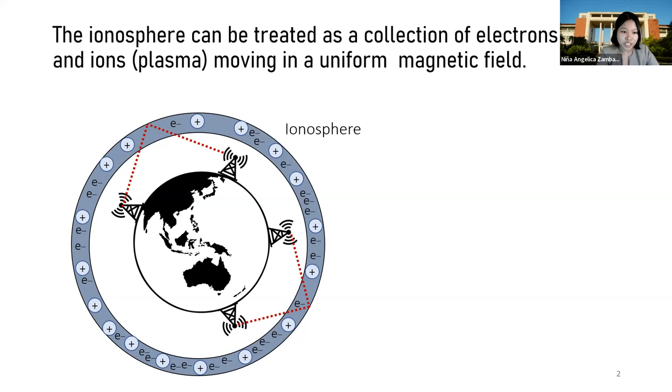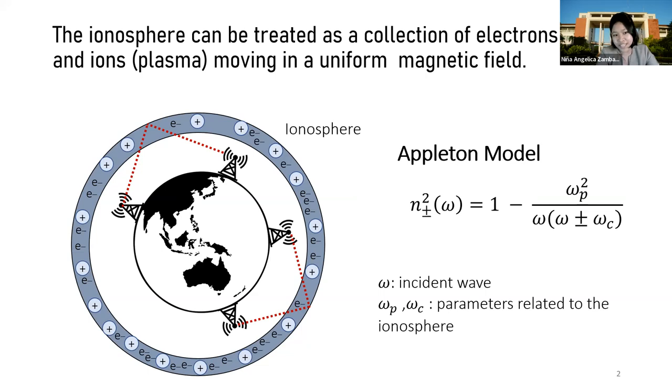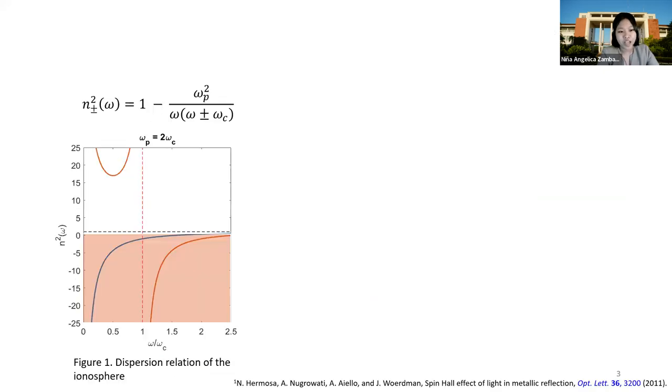This is called the Appleton model, named after the 1947 Nobel Prize for Physics laureate, E.V. Appleton. In this model, the dispersion relation or the index of refraction is given by this equation, where omega is the incident wave frequency, and omega_p and omega_c are the frequency parameters related to the ionosphere. Plotting this equation, we see negative refractive index values, which suggests that the ionosphere is a lossy medium.